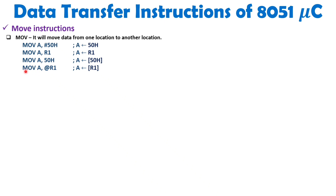When you write MOV A, @R1, the '@' means R1 is pointing to a RAM location. For example, if R1 contains 15H, then 15H is the RAM address, and whatever data is at that address gets moved into the accumulator. So '@' means R1 is pointing to an internal RAM address.